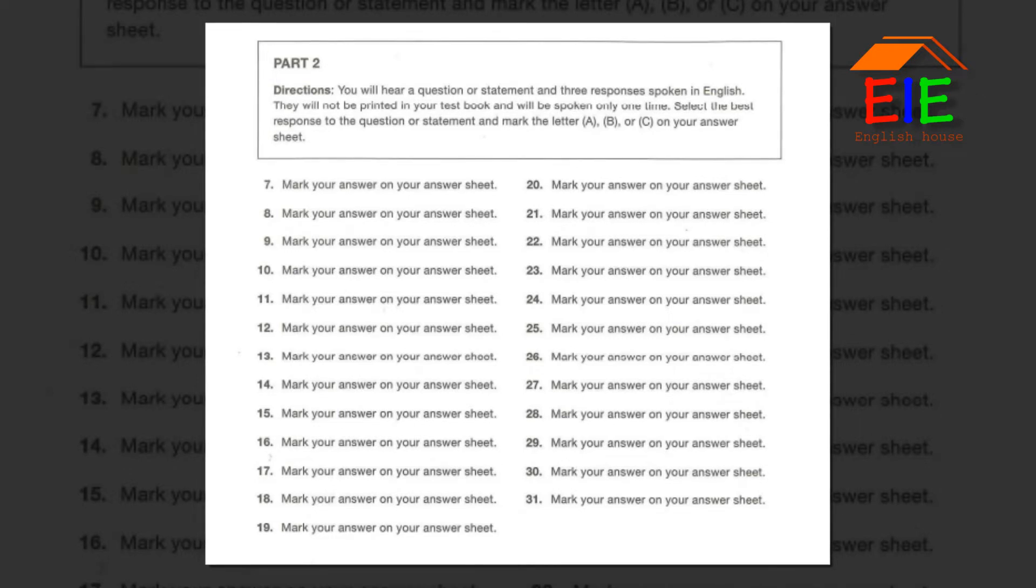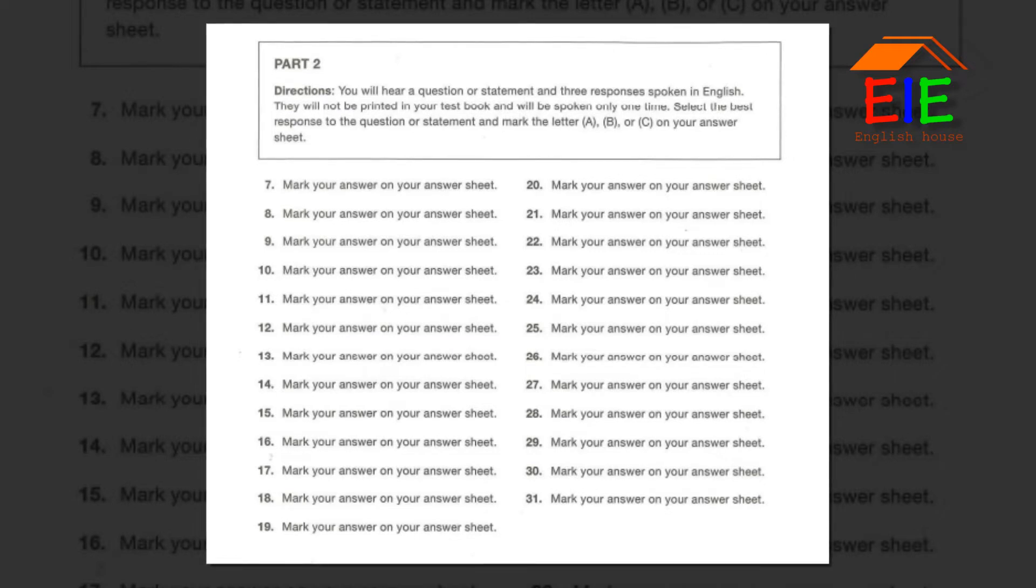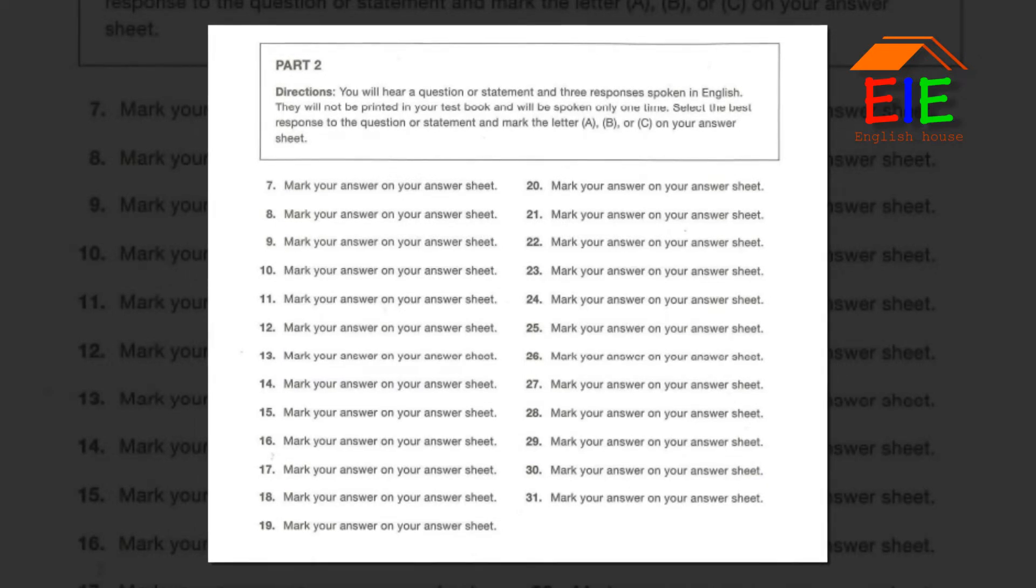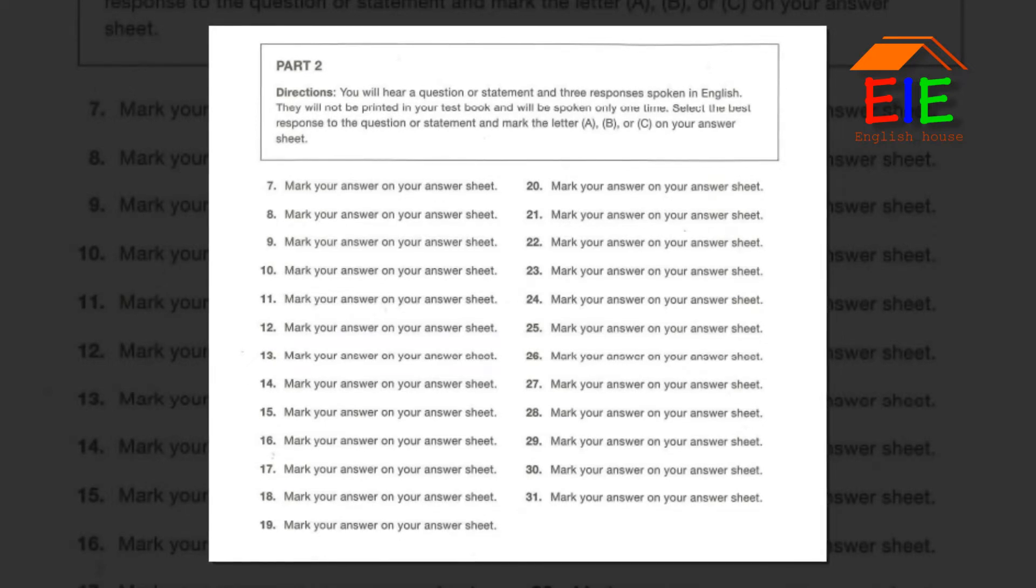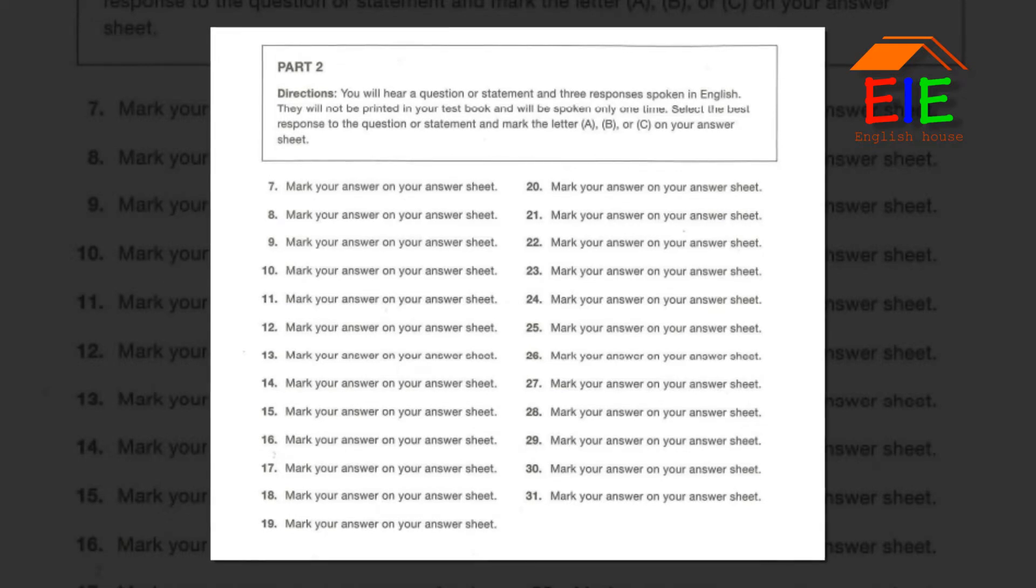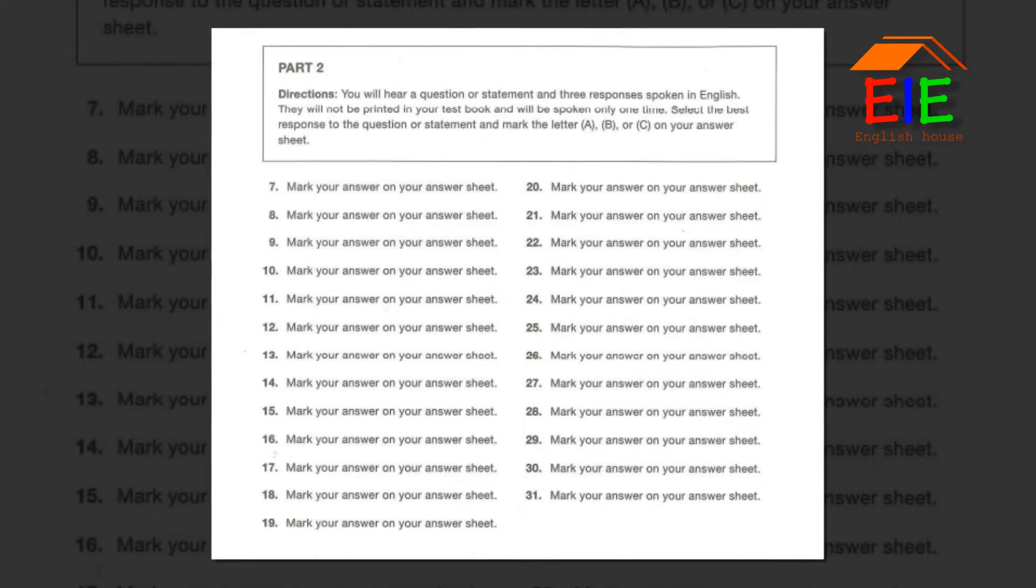Number 8. Could you find a different shirt for that customer? A. Main Street. B. Sure, what size? C. A suit and a tie. Number 9. When did you send me the invoice? A. Because I've done a lot of work. B. Keith from the marketing department. C. Sometime last week.